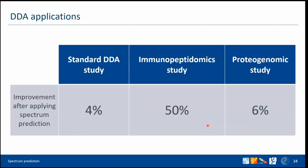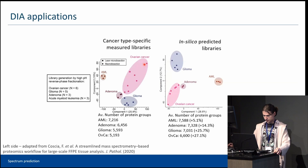If we compare the benefits that different areas gain from spectrum prediction, immunopeptidomics is the clear winner. Why that happens is not entirely clear, but it may be related to the fact that they deal with non-tryptic peptides.